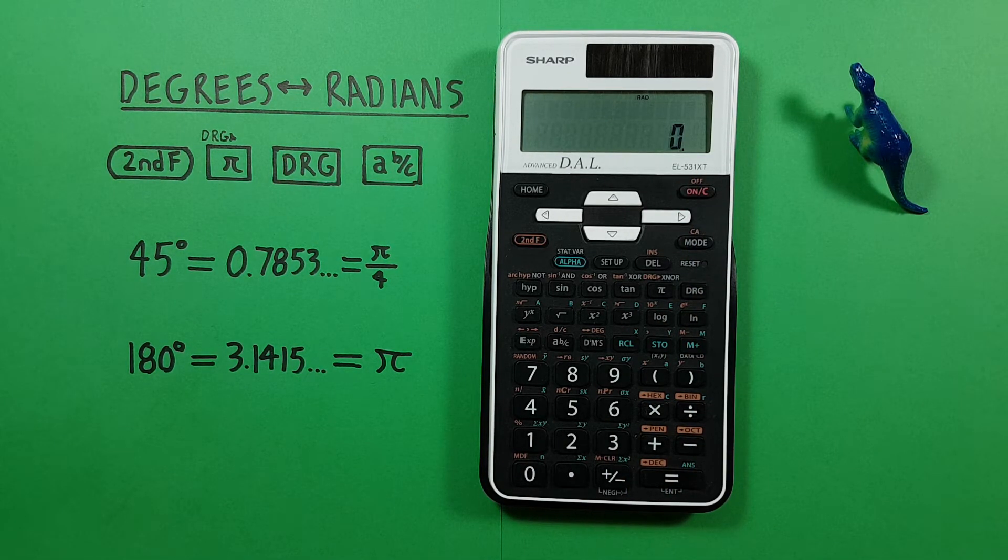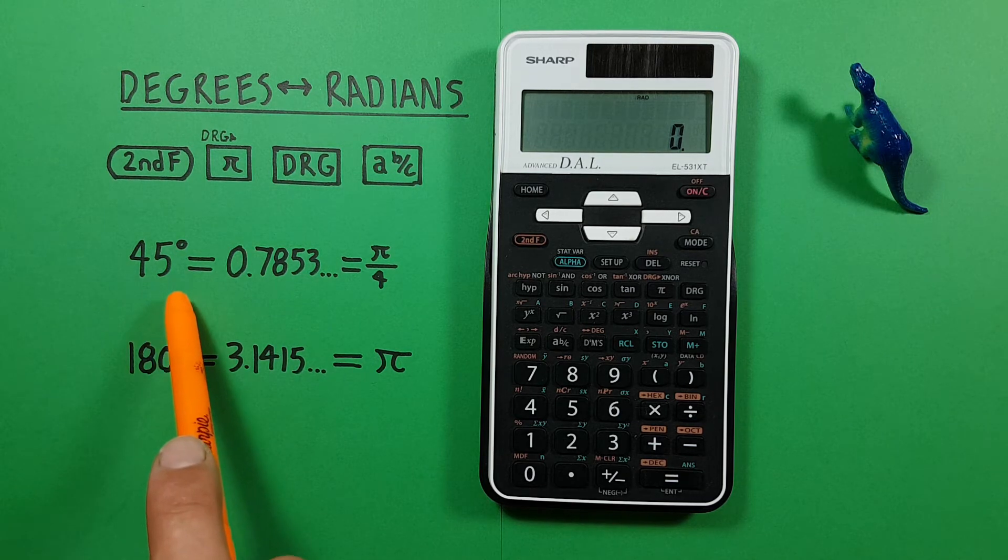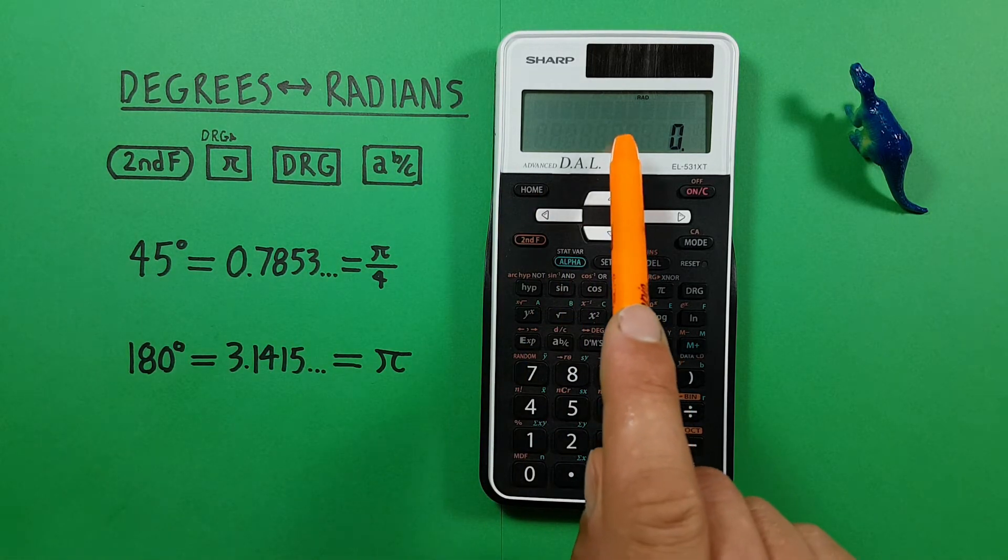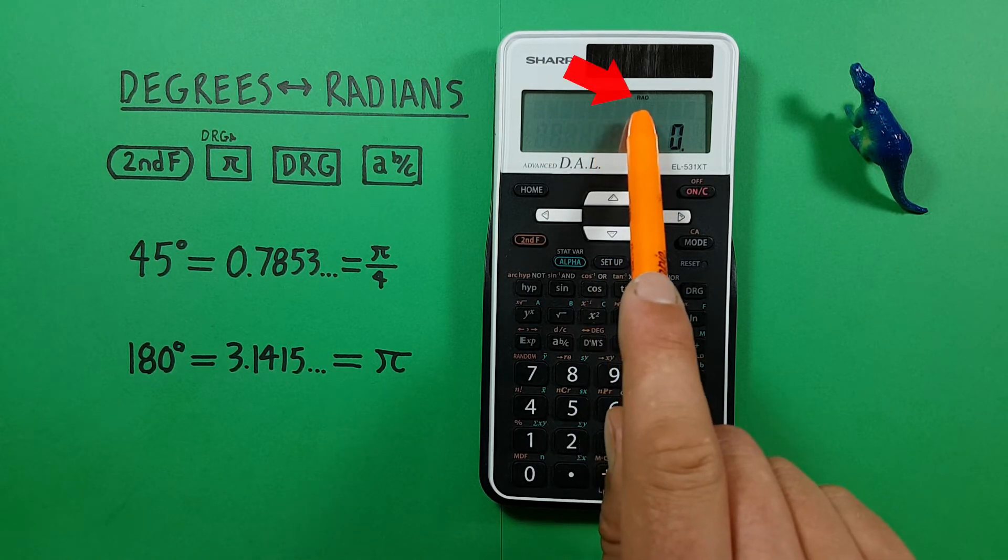What if we want to take it the other way? Let's say we are given a value in radians format and want to convert that to degrees. Well, we start by making sure we're set to the mode we're entering. And you can see it's in rad at the top. So we're good to start.